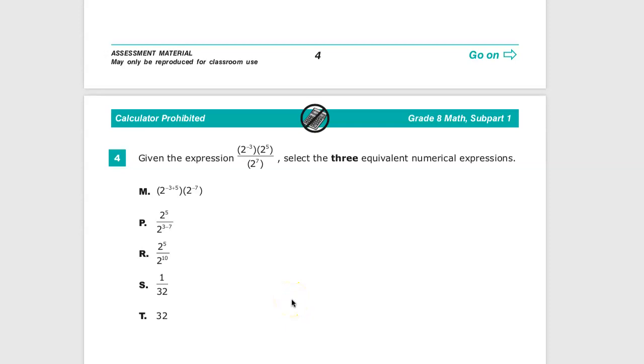Hey, this is the grade 8 practice test for TN Ready. In the 1920 version of this test, this is question number 4. Given the expression 2 to the negative, raised to the negative 3 power times 2 to the 5th power, divided by 2 to the 7th, select 3 equivalent numerical expressions.